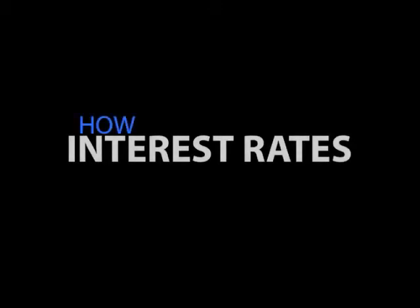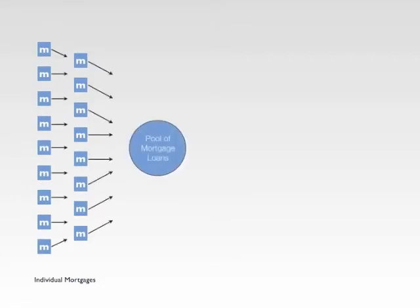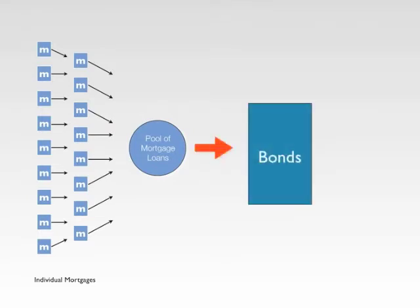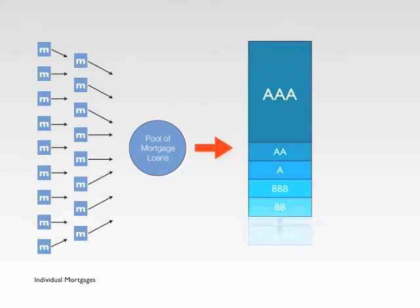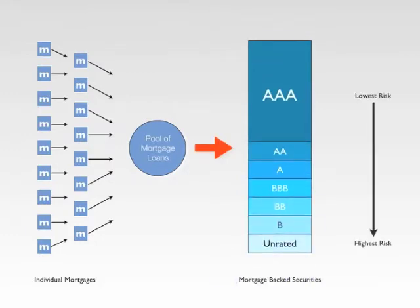I'd like to cover a topic we hear a lot about — interest rates, but specifically how interest rates move. It all starts with securitization, where we take a bunch of individual mortgages and put them together into a giant pool of mortgage loans. That pool is further segmented into mortgage bonds, which are classified based upon their risk profile — from AAA rated bonds, the lowest risk, to unrated or junk bonds, the highest risk.